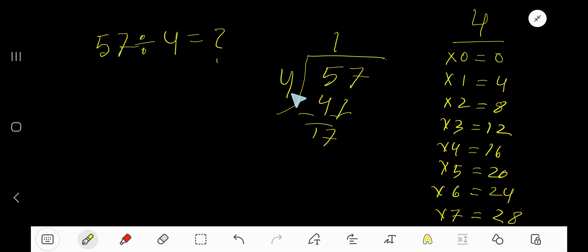17. 4 goes into 17 how many times? 5 times would be 20, which is too much, so 4 times. 4 times 4 is 16, subtract to get 1. So our answer is 14 remainder 1.